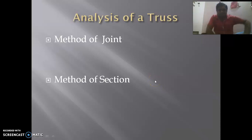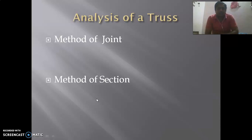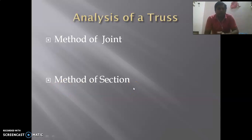Now we talk about analysis of a truss. There are two methods: method of joint and method of section. The method of joint is useful for finding the forces in all members of the truss. The method of section is particularly used when the magnitude and nature of forces in only a few members are required to be found out. This concludes our lecture on trusses.